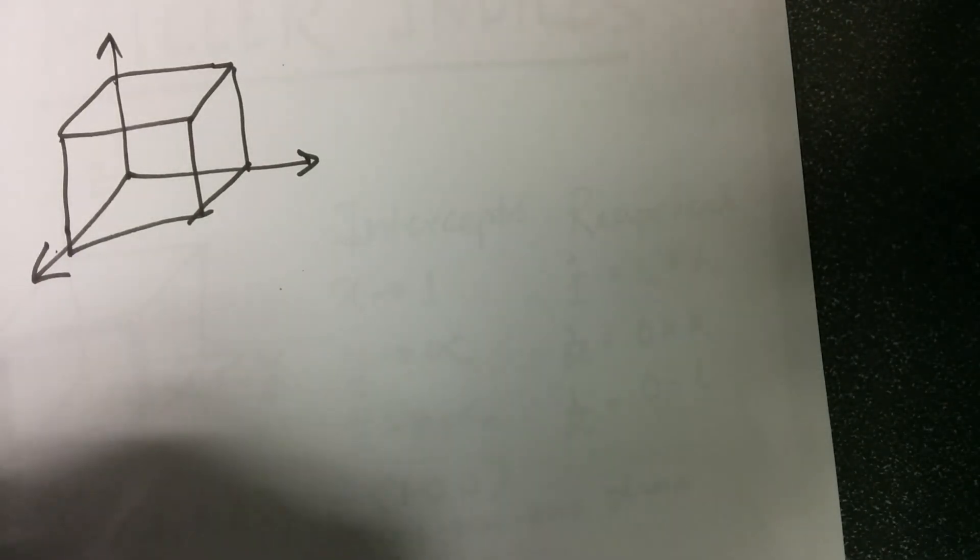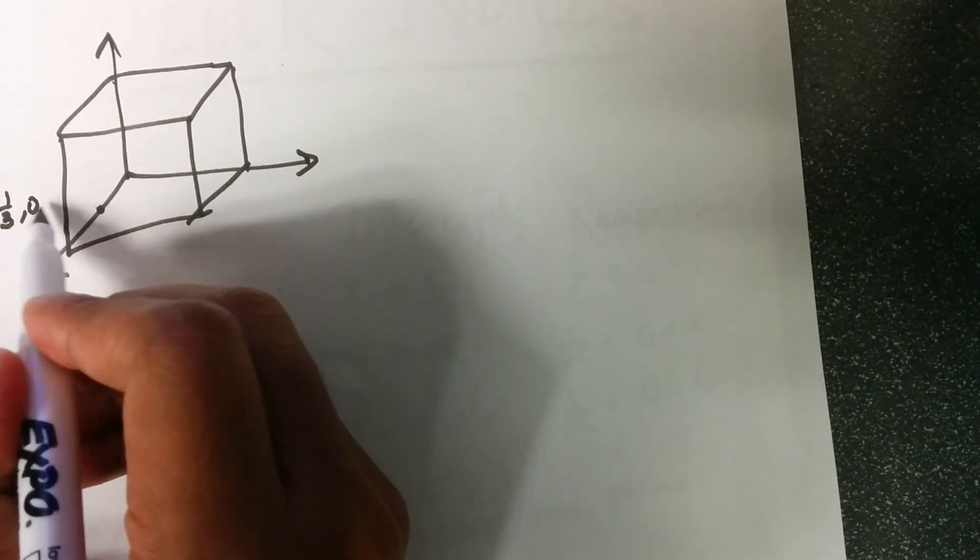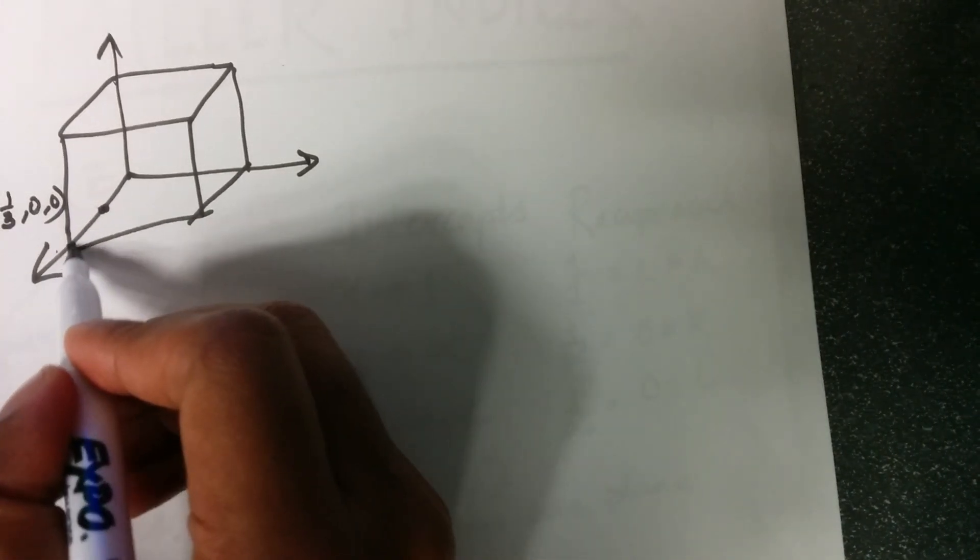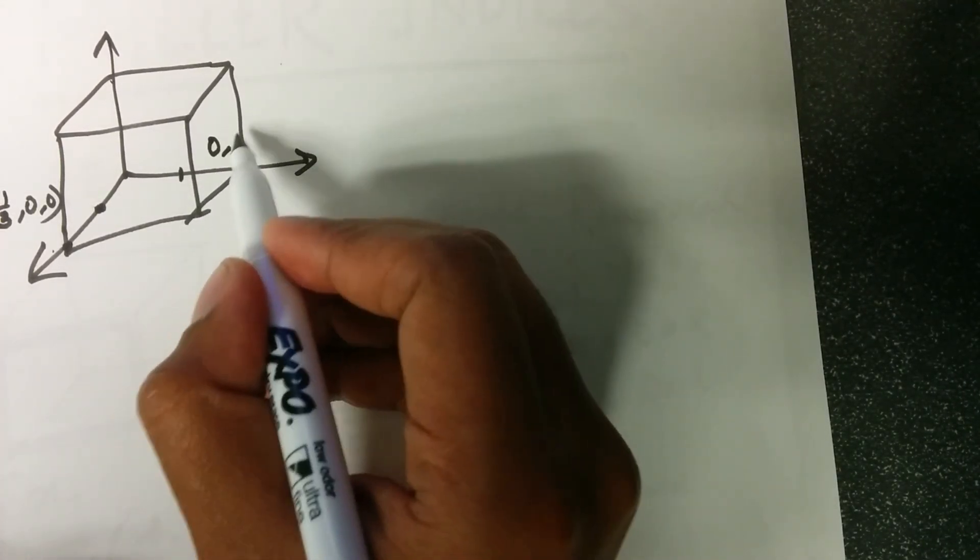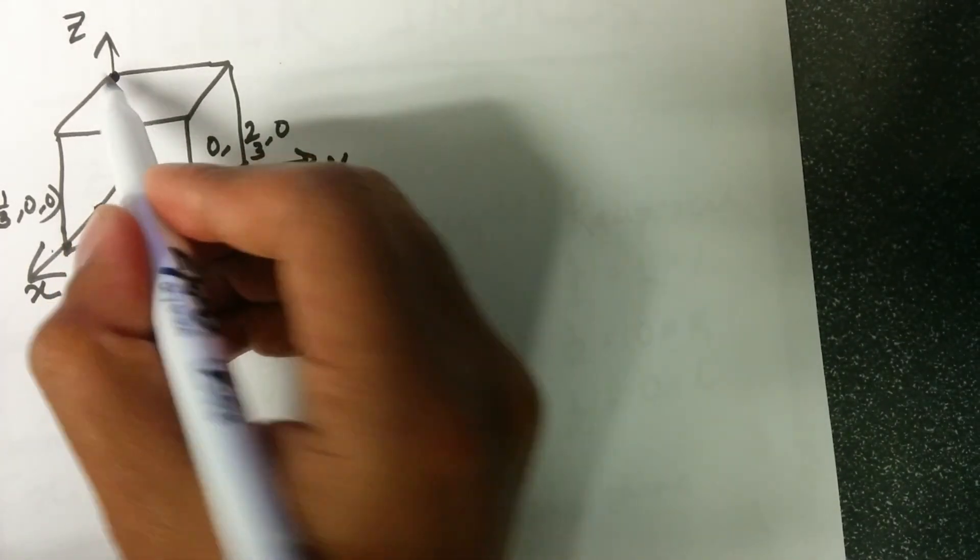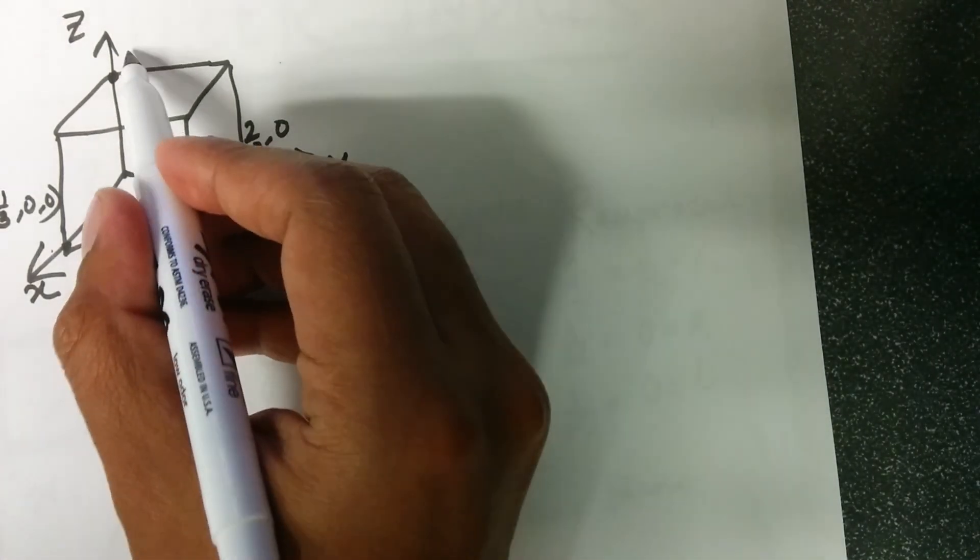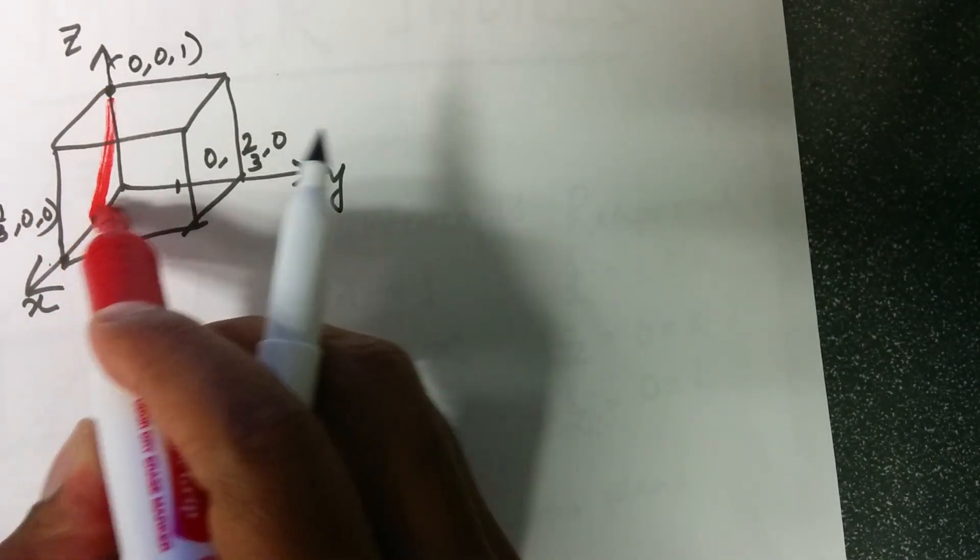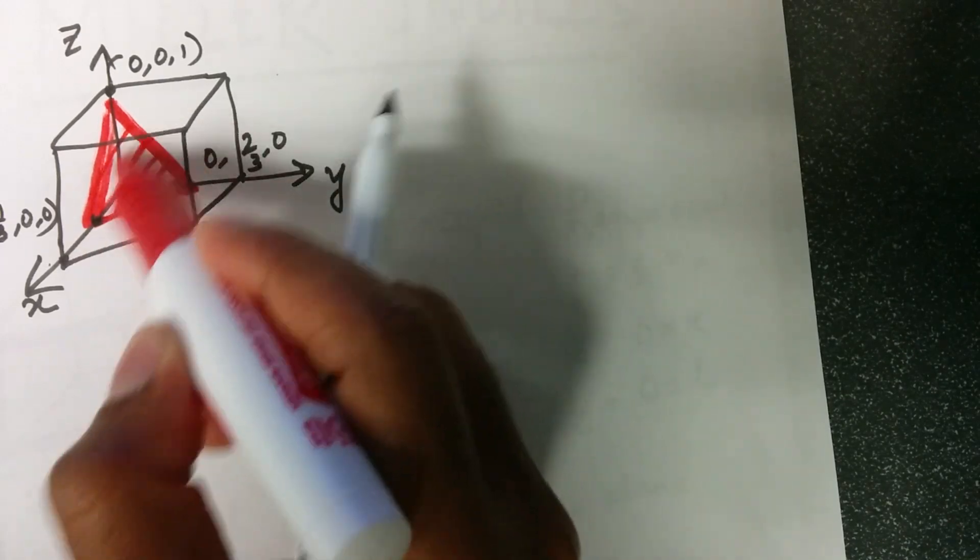Suppose the plane is intercepting the x-axis at a point (1/3, 0, 0), which is this point, because this is one. It is intercepting the y-axis at a point (0, 2/3, 0). This is x, this is y, this is z. I should have labeled them before. And suppose the plane is intercepting the point on z-axis as (0, 0, 1). Now let's draw this plane. It is a triangular looking plane as we see here, and we can hatch it.